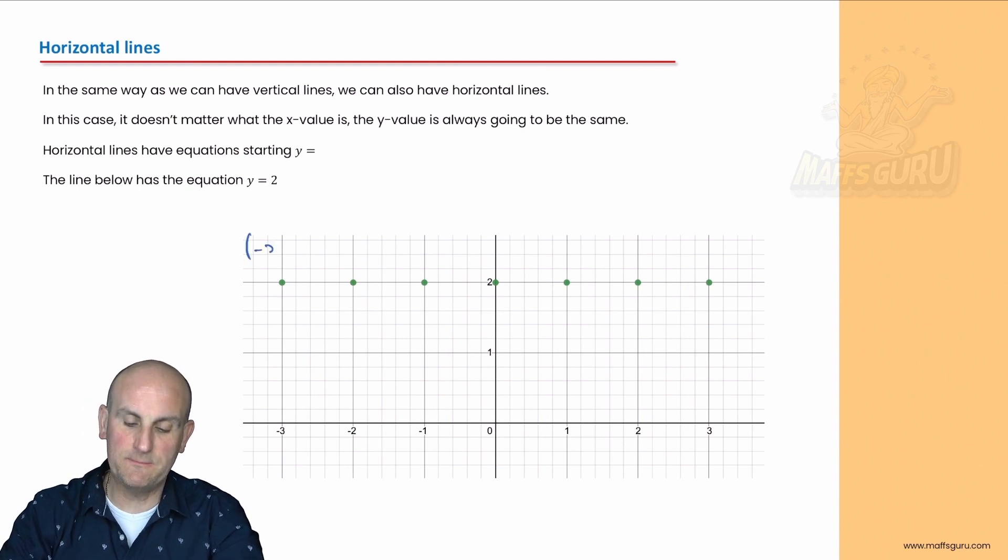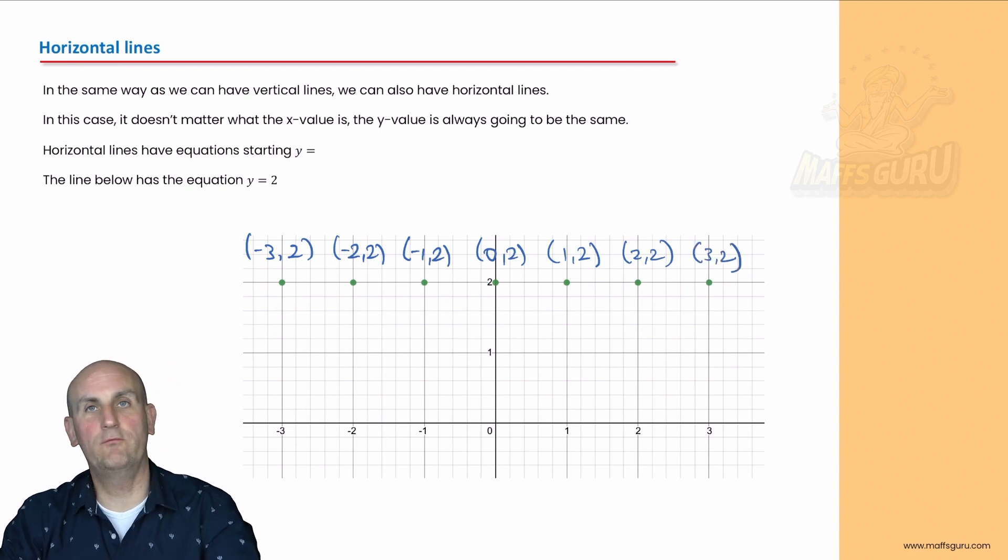Let me write the coordinate value of that one. That is minus 3 comma 2, this one here is minus 2 comma 2, minus 1 comma 2, 0 comma 2, 1 comma 2, 2 comma 2.